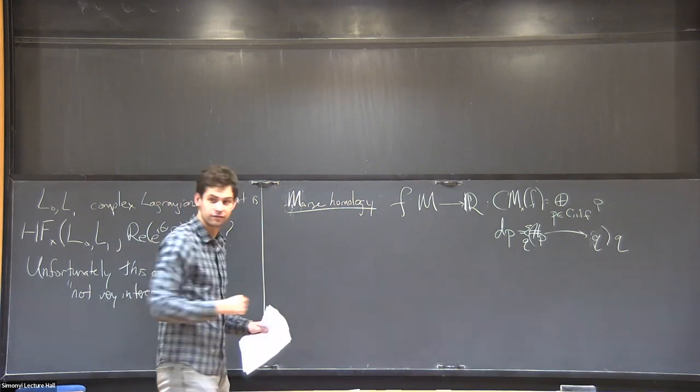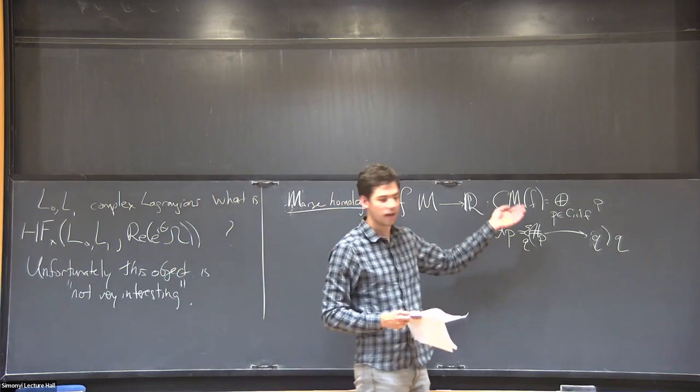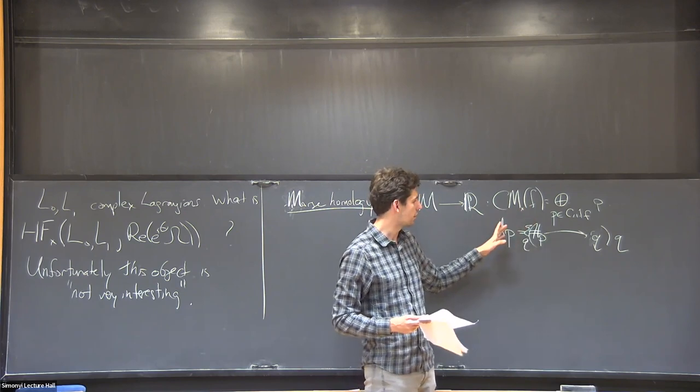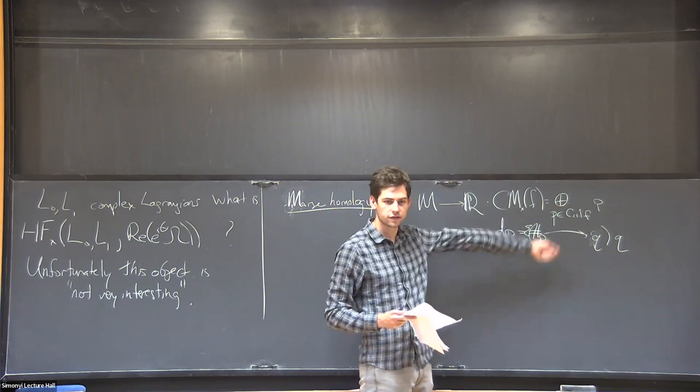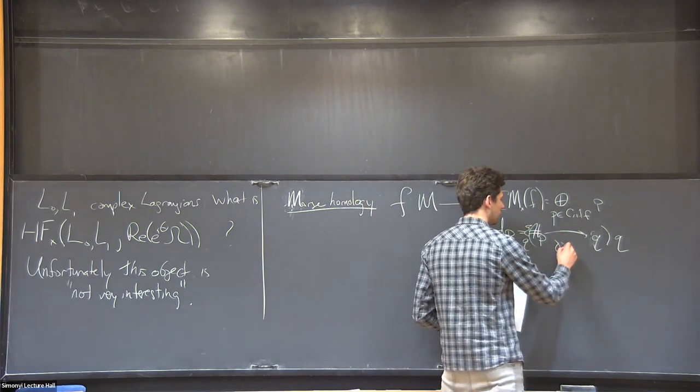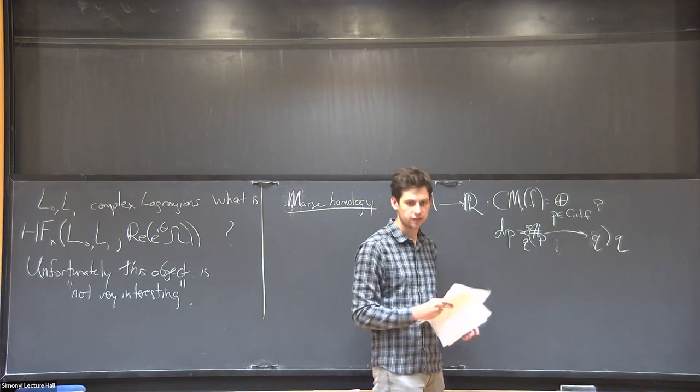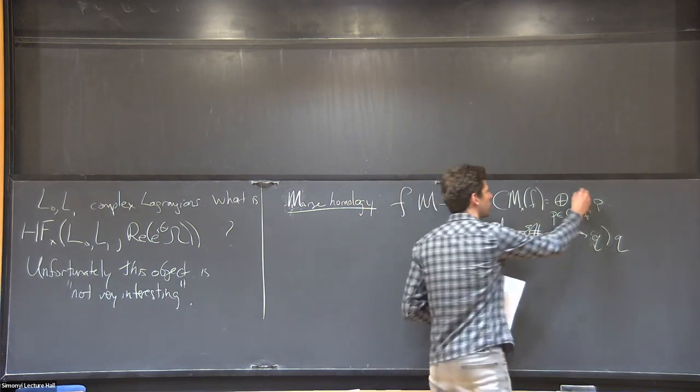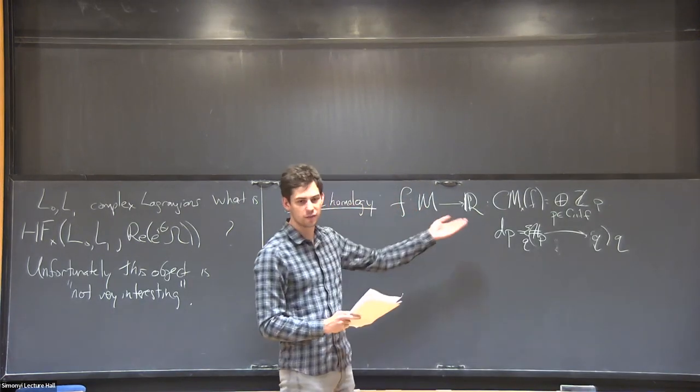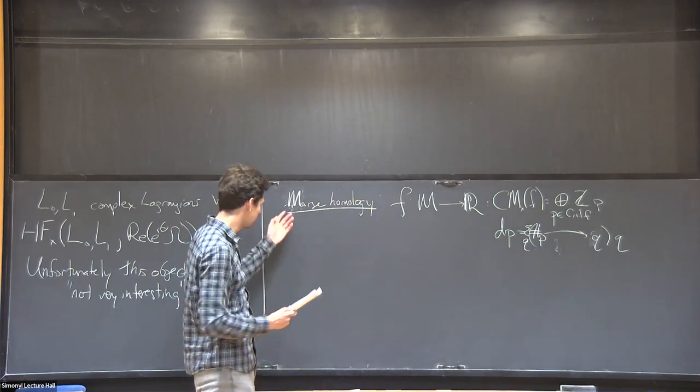Then you say D, the differential of P, is the number of flow lines—the isolated flow lines from P to Q times Q, sum over Q, with respect to the downwards gradient flow. So you count, if F is generic, the number of isolated gradient flow lines of this function. There's some signs depending on orientation, and you have to count these with sign appropriately, or you can do it mod two so you don't have to think about signs. That's Morse homology.